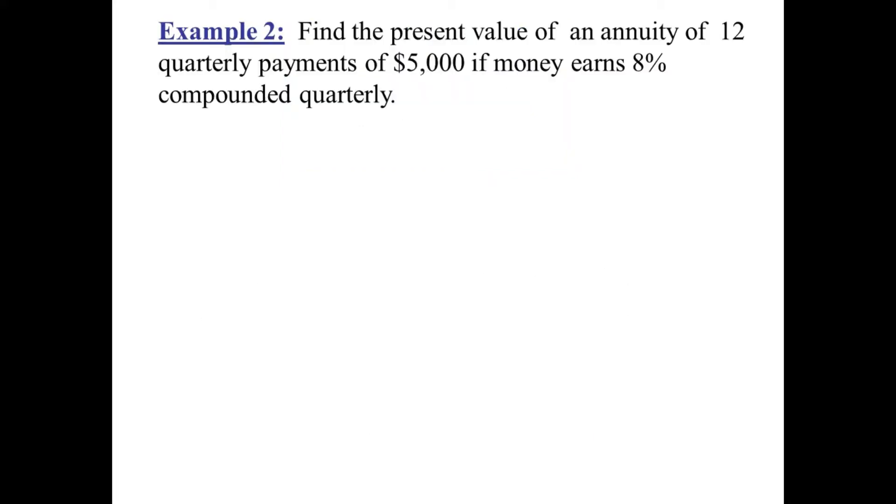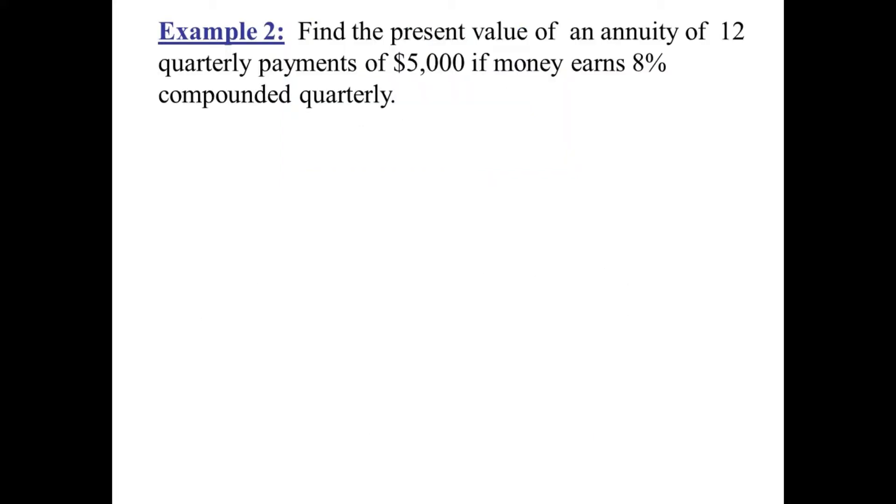Let's do another example. Find the present value of an annuity of 12 quarterly payments of $5,000 if money earns 8% compounded quarterly.